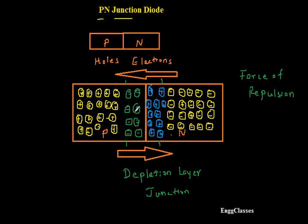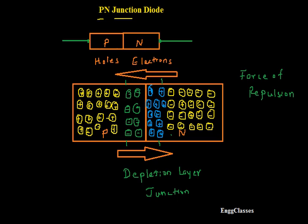This is the basic operation of the P-N junction diode. Now, if I want to use this P-N junction diode for the external world — for different applications — I need to provide connections to the external world. So I get two metal contacts: at the P-type side I call it the anode, the positive side of the diode; and the negative side I call the cathode. Now the diode is ready for us to use in the external world.